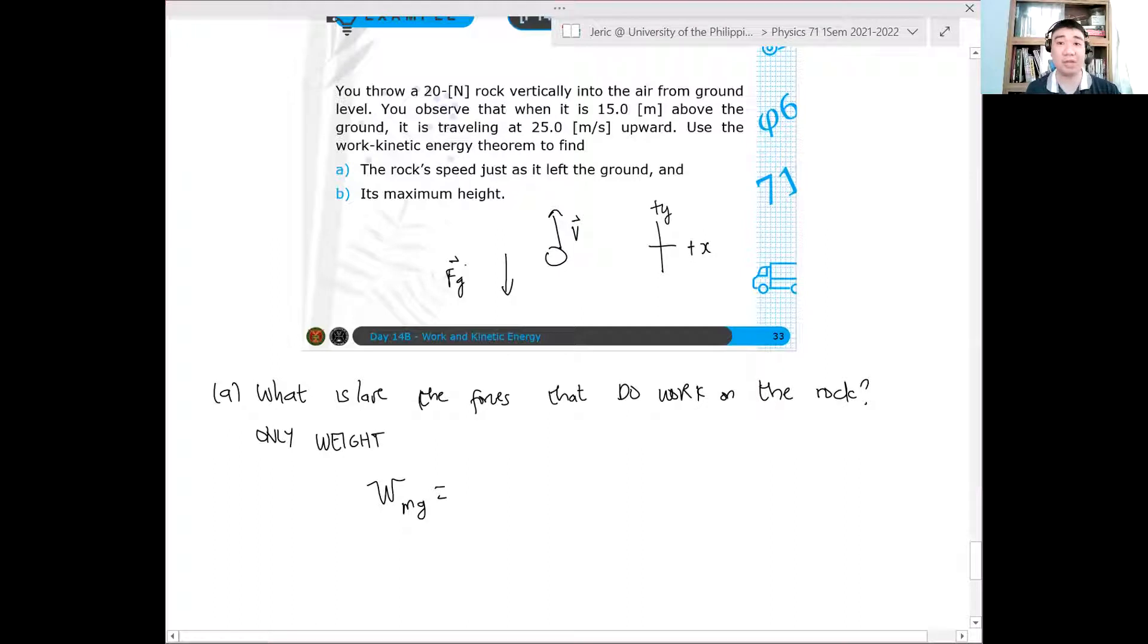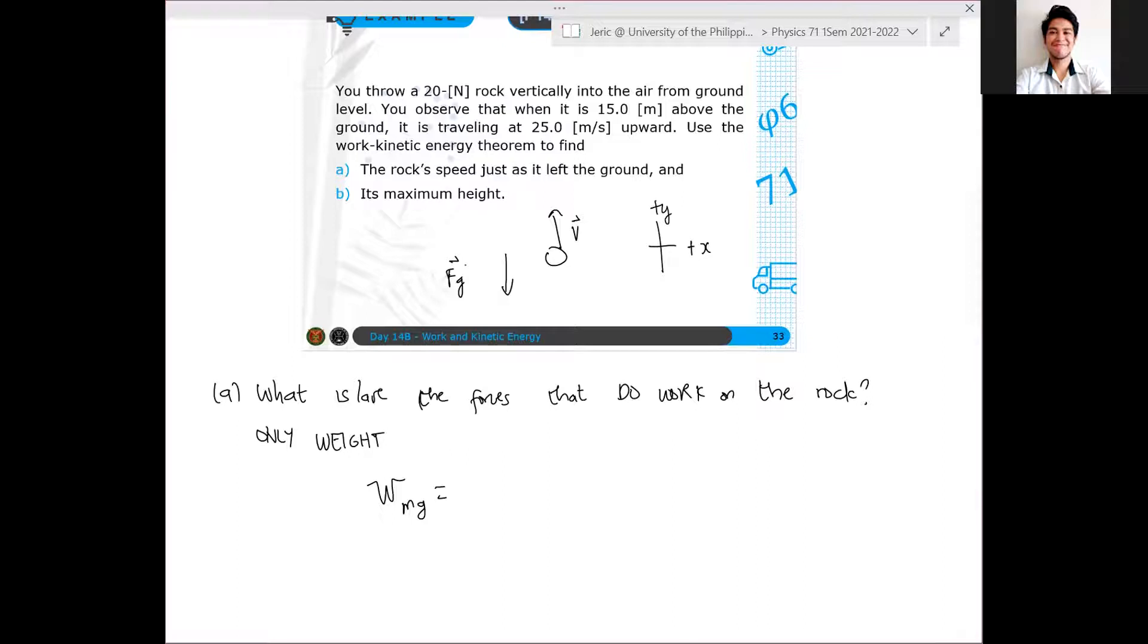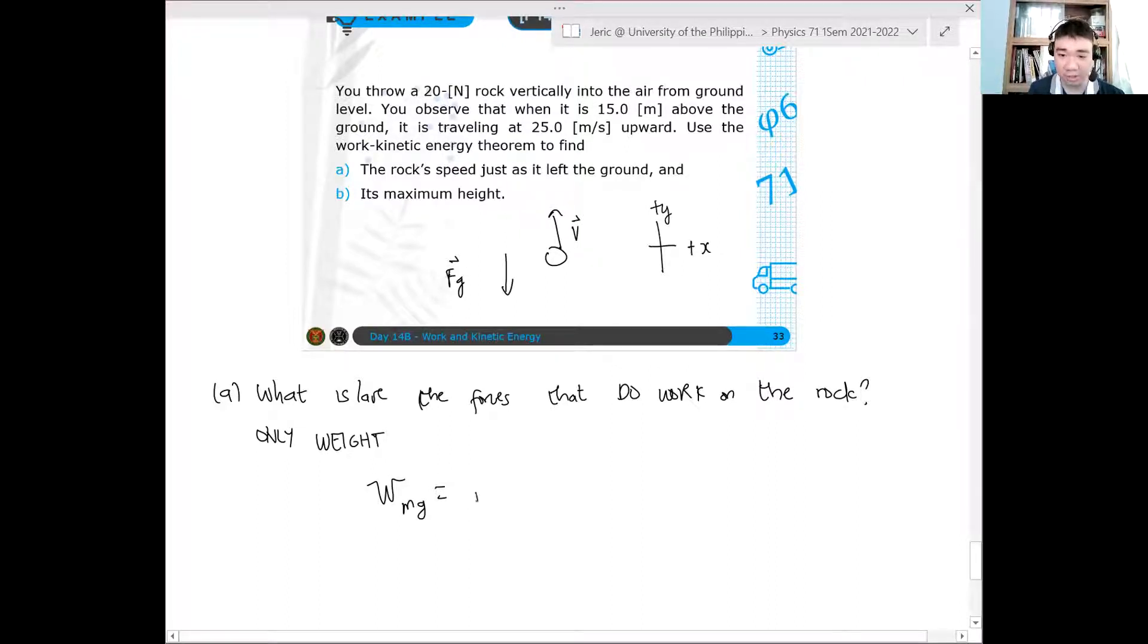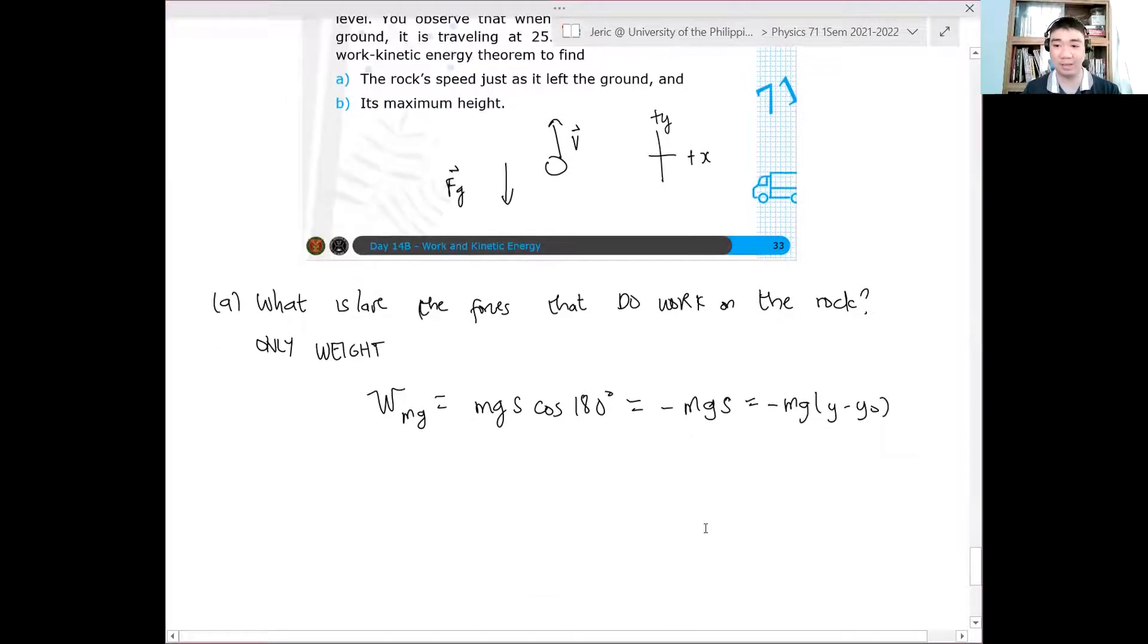And thus, what can we say about the work done by the weight? It should be negative, right? Because the direction of the displacement, which is signified by the direction of the velocity, is anti-parallel to the direction of the weight. Therefore, ang lalabas dito is mg s cosine 180 degrees, which is just equal to minus mg s, where s is the displacement. So I'll change this to be minus mg quantity y minus y naught. Where y is the final displacement and y naught is the initial position.